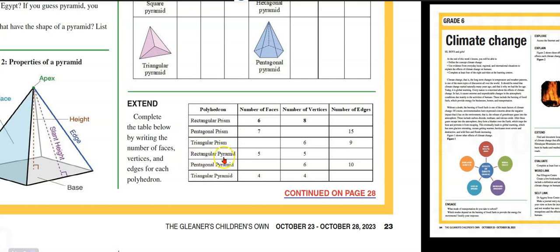Rectangular pyramid, pentagonal pyramid, triangular pyramid. Number of faces, number of vertices, number of edges. For the rectangular prism, we have six faces, eight vertices. Tell us the number of edges and complete this table.